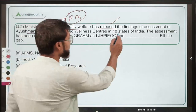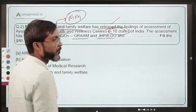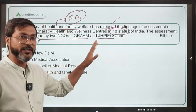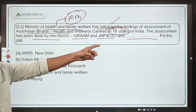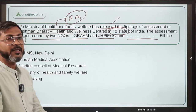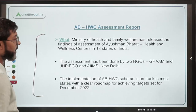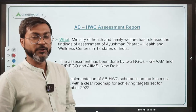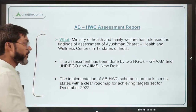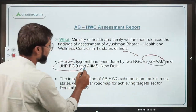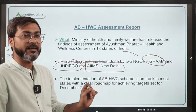This assessment was done in 18 states and was conducted by two NGOs — GRAM and JHP Go. Please don't go into the details of these two NGOs as they are not relevant for the exam. From the government side, AIIMS New Delhi contributed to this assessment.